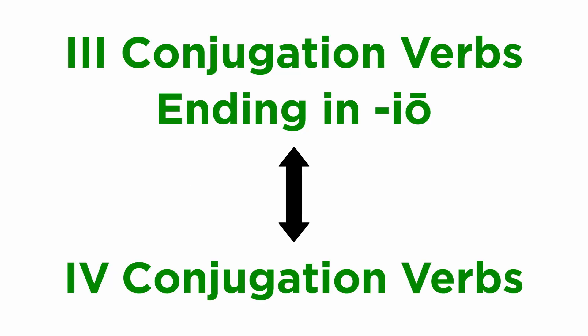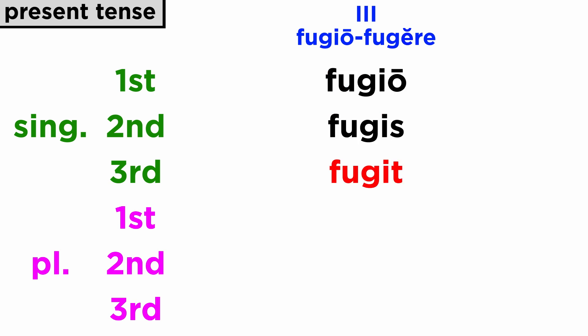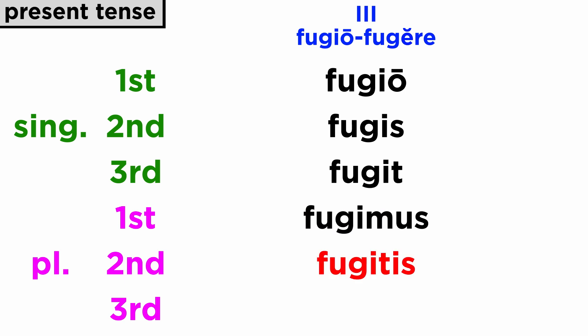Very closely resembling the fourth conjugation are the verbs of the third conjugation in -io, but their infinitive is actually ending in -ere. Here the thematic vowel, which is short, does change. Let's review fugio, fugere, meaning 'to flee,' and recall the forms. Notice the stress in the forms: fugio, fugis, fugit, fugimus, fugitis, fugiunt.